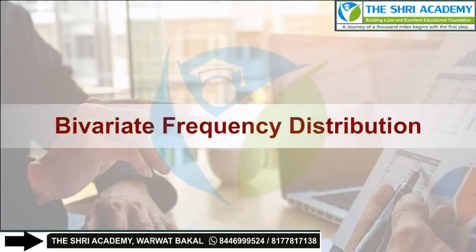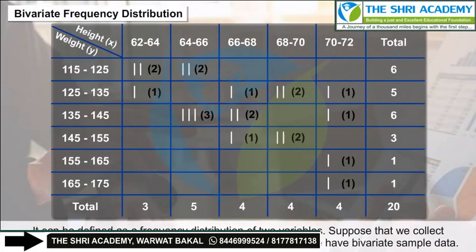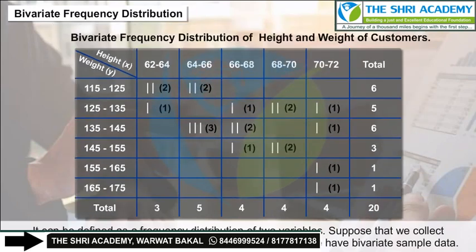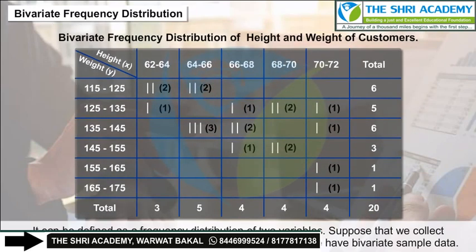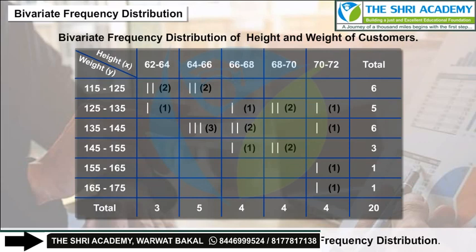Bivariate frequency distribution can be defined as a frequency distribution of two variables. For example, if we collect information on height and weight of customers, we have bivariate sample data, which can be summarized using a bivariate frequency distribution.